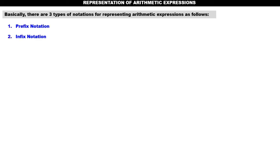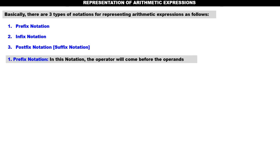Number one: prefix notation. Two: infix notation. Number three: postfix notation, which is also called suffix notation. In prefix notation, the operator will come before the operands. For example, '+ab' — plus is the operator, a and b are the operands. The operator plus comes before the operands a and b. That is prefix.